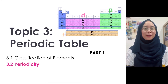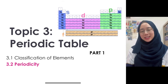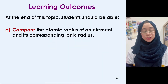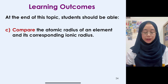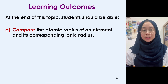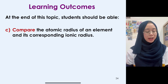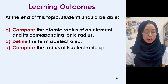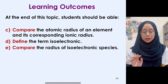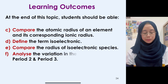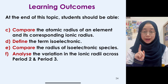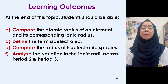Assalamualaikum and good day everyone. Today we are still in subtopic periodicity. By the end of this session, you should be able to compare the atomic radius of an element to its corresponding ion. We will also be looking at isoelectronic species, comparing the radius of isoelectronic species, and analyzing the variation of ionic radii across Period 2 and Period 3.